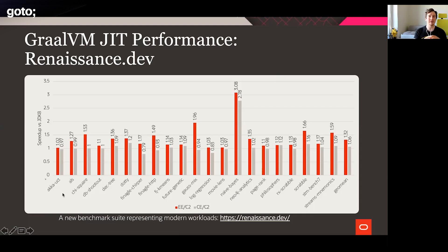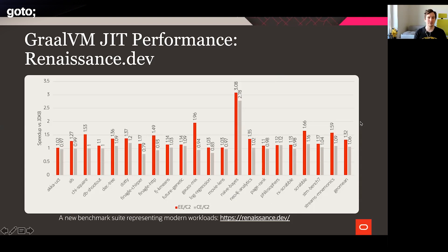There's also some Akka — newer libraries that weren't as popular maybe 10–15 years ago when some other benchmark suites were created. These would resemble modern Java code much more than some other benchmark suites. On the graph you can see that on average, GraalVM outperforms the normal OpenJDK setup by approximately 30%, which is a non-trivial result.